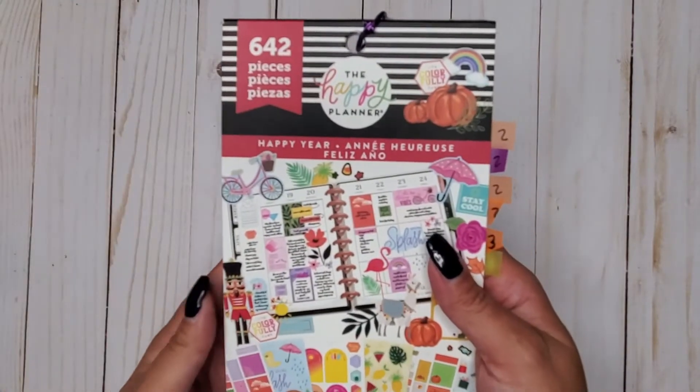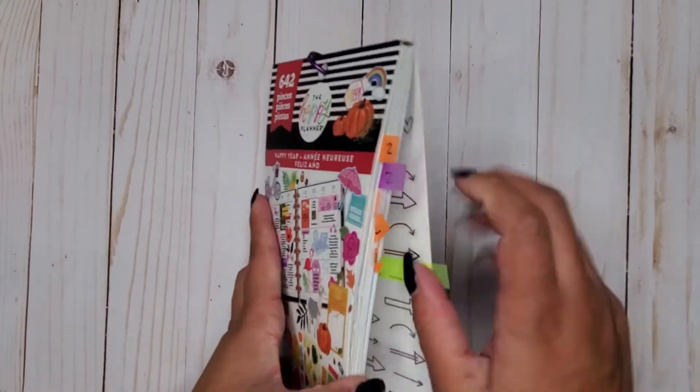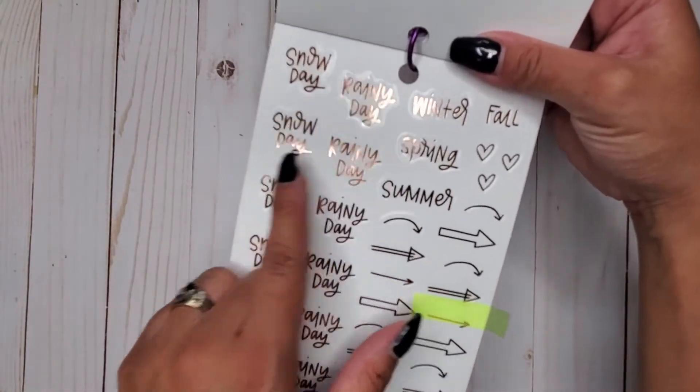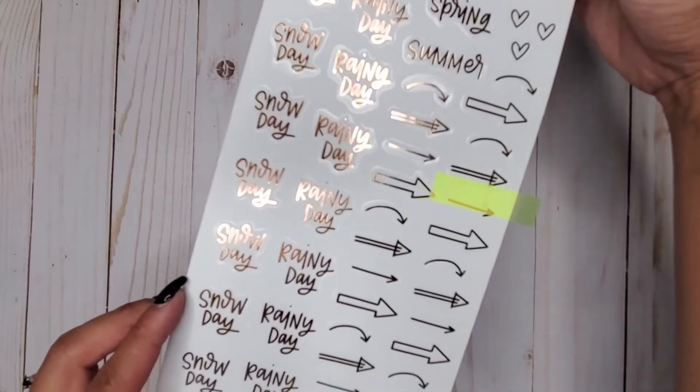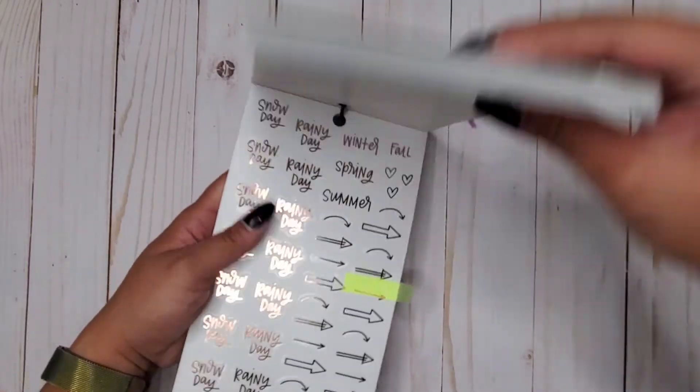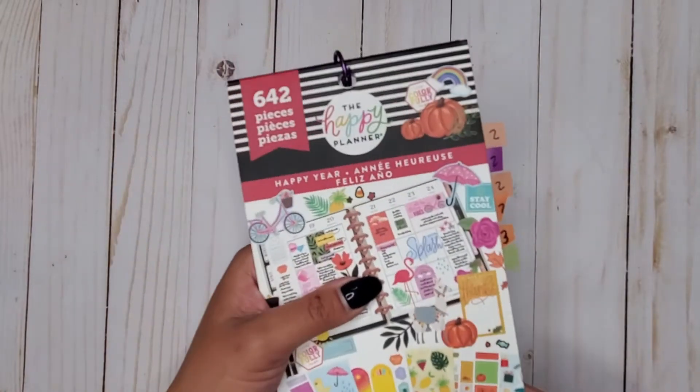Then I have happy year 642. In here these ones are words, so you have 'snow day,' 'rainy day.' I thought I'd include those because why not, super cute. So that's in happy year 642.